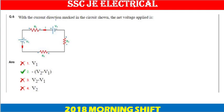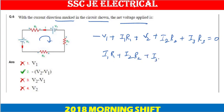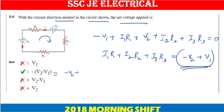Next question: what is the current direction marked in the circuit below? Applying KVL, the net voltage equation is: minus V1 plus I1 R1 plus V2 plus I2 R2 plus I3 R3 equals 0. Solving gives V2 minus V2 plus V1, which is the correct answer.